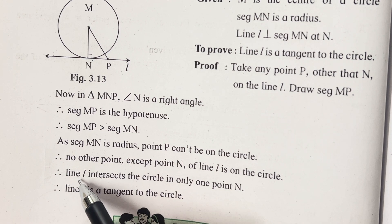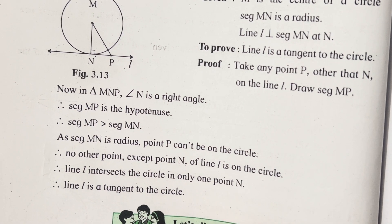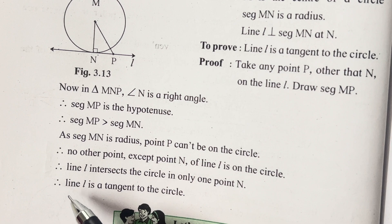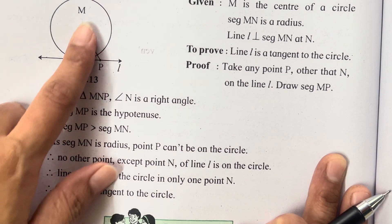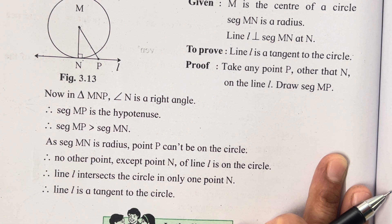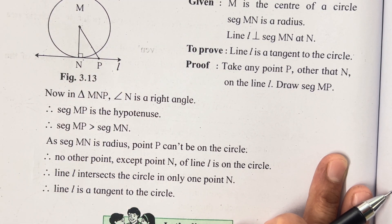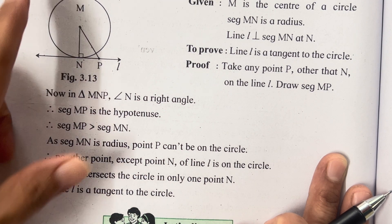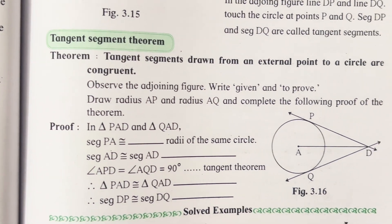Therefore, line l intersects the circle at only one point. It has been proved that the tangent touches the circle at only one point, and therefore line l is the tangent of the circle. Only one point, that is N, is where the tangent joins the circle as well as the radius — a tangent can join a circle at only a single point. This is the main purpose of showing the converse of tangent theorem, and you will use this while solving examples.